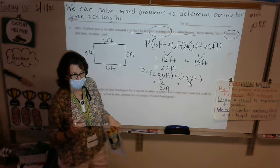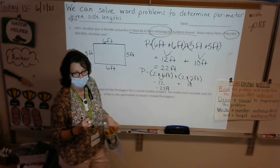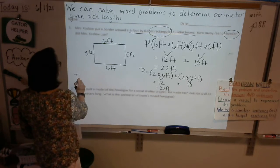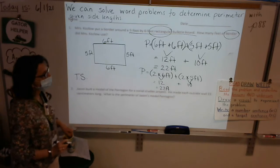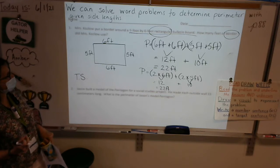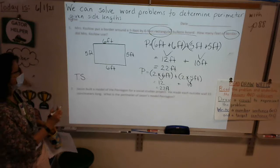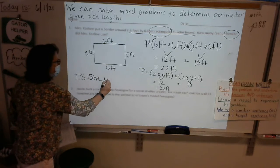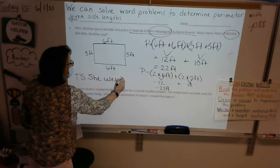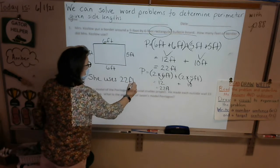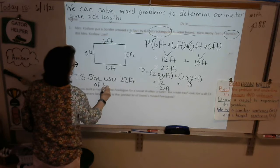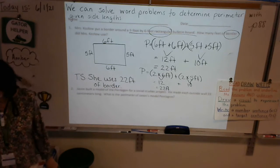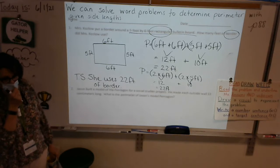Now, what do we need? We have a number sentence. We did our drawing. What are we still missing? Target sentence. So let's go ahead over here, and I'm going to put TS for target sentence. And it says, How many feet of border did Mrs. Coslow use? I'm going to replace her name with a pronoun. She uses 22 feet of border. And there, boys and girls, is a word problem where we solve for perimeter.